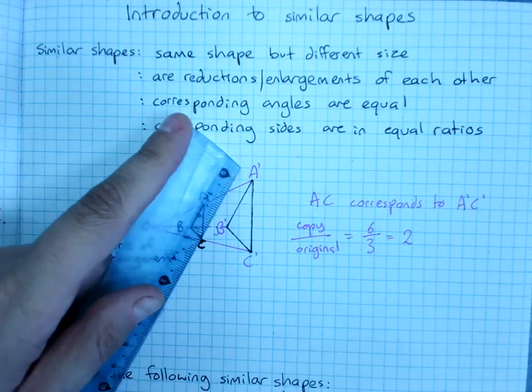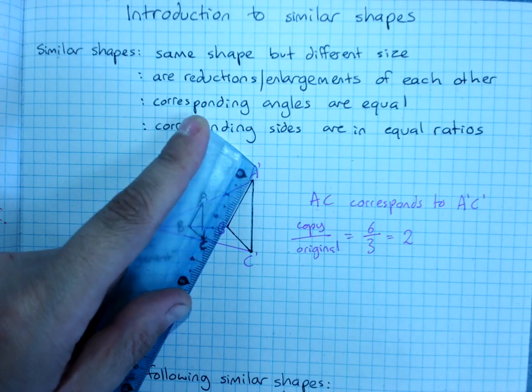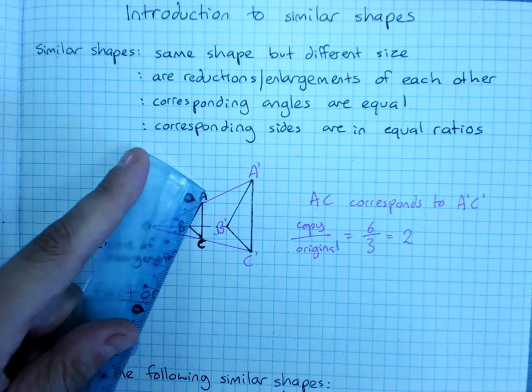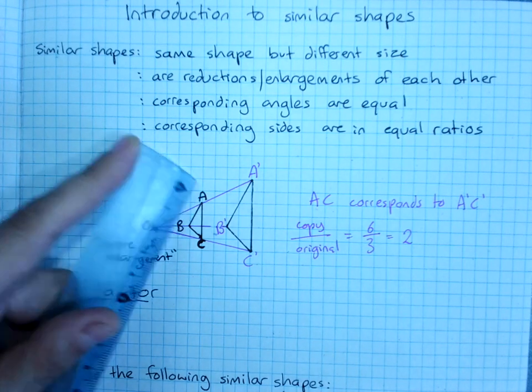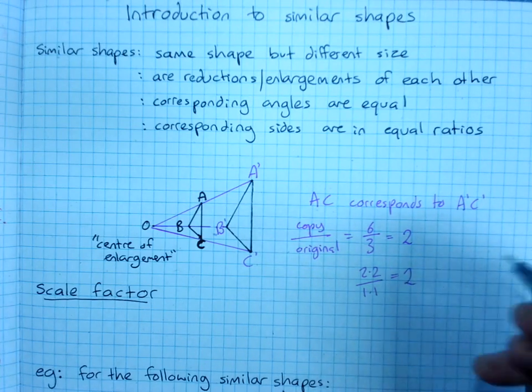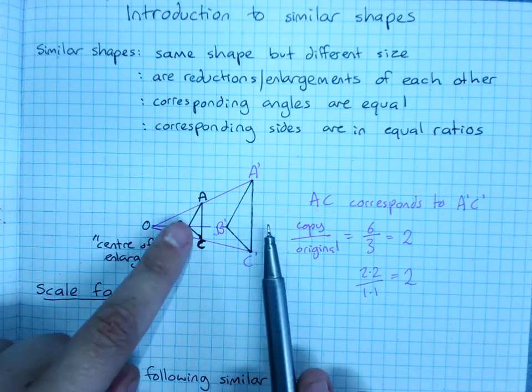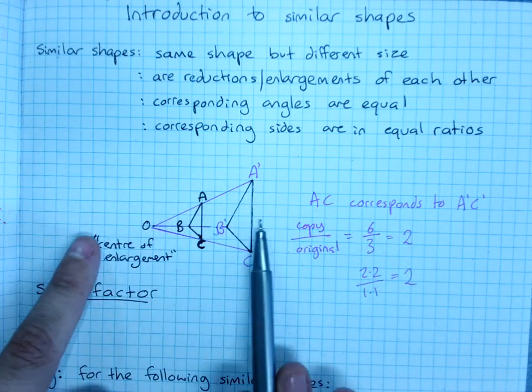If I measure this one, A prime B prime is 2.2 compared to 1.1. 2.2 over 1.1 gives me two. Every pair of corresponding sides is in the same ratio on this shape.